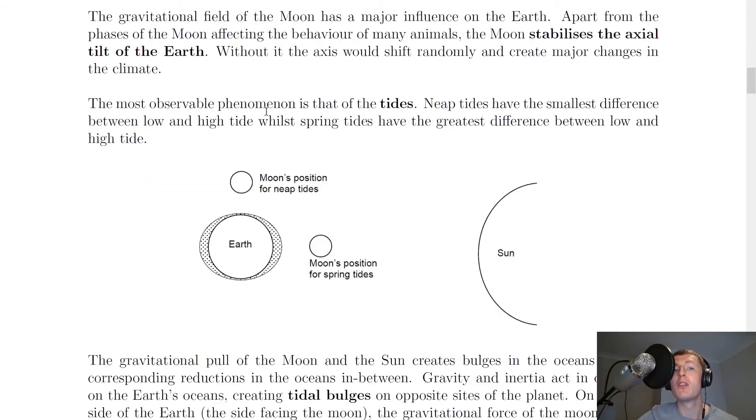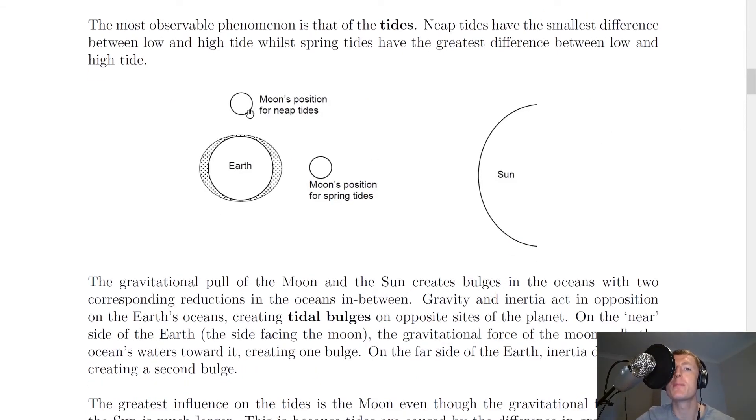The most observable phenomenon, however, is that of the tides. We have two types of tides, called neap tides and spring tides. Neap tides have the smallest difference between low and high tide, while spring tides have the greatest difference between low and high tide. This picture here shows the Moon's position for the neap tides. The Moon would be above the Earth here, and for the spring tides, the Moon would be over here.